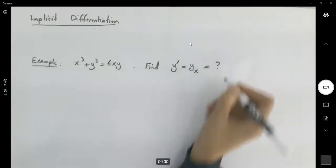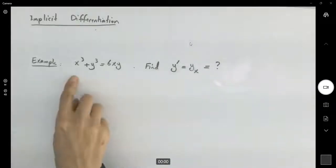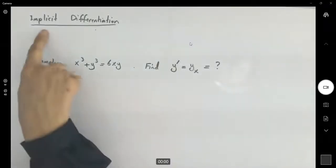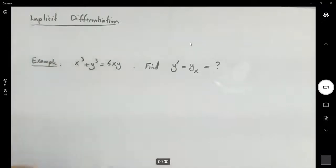This is what we're trying to find. When you have a combination of variables x and y, you can apply the formula for implicit differentiation.